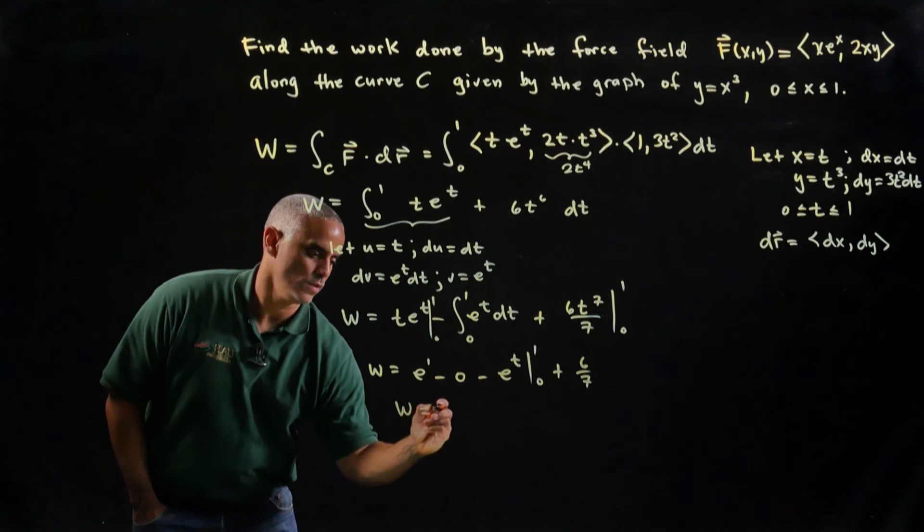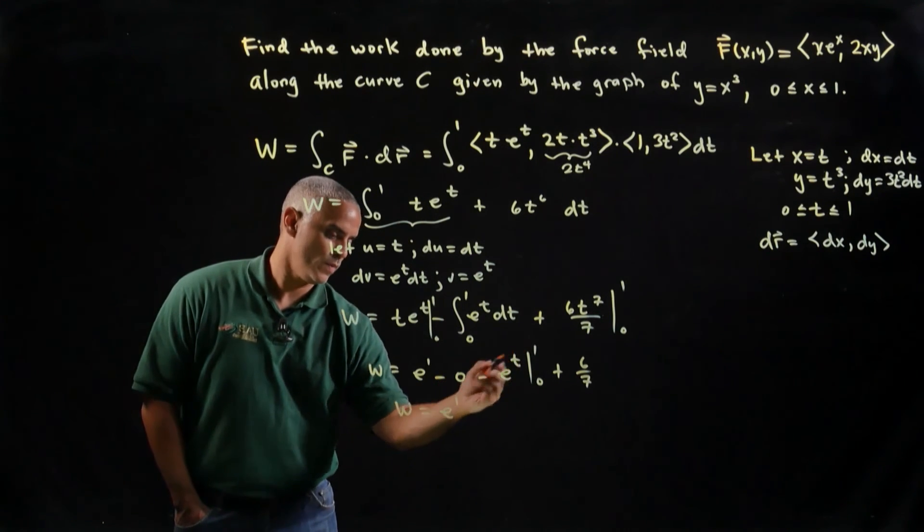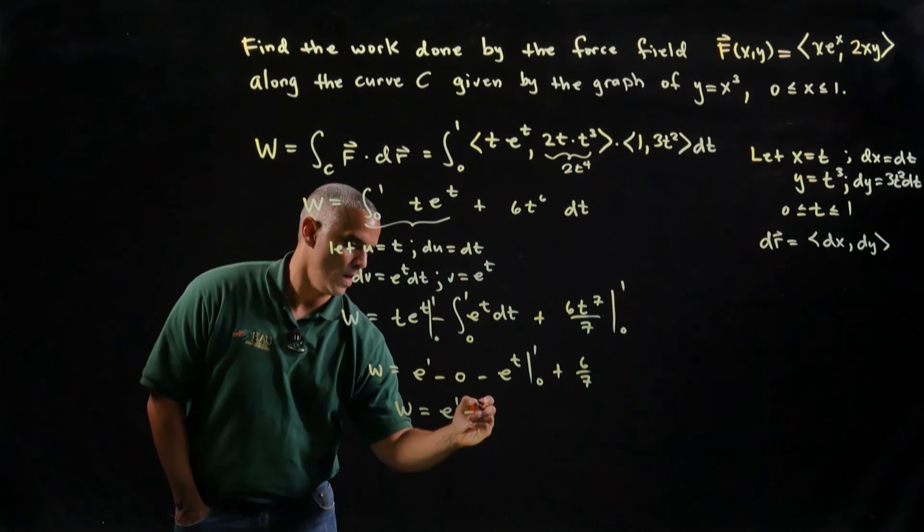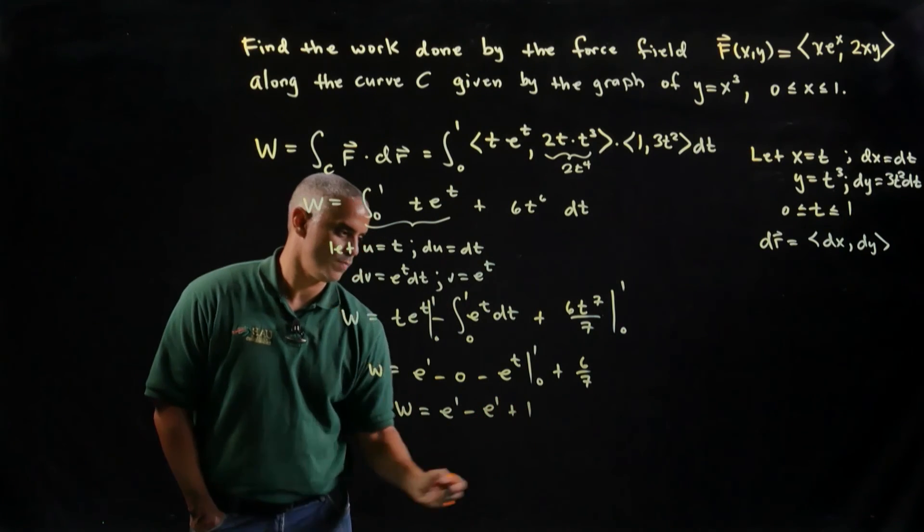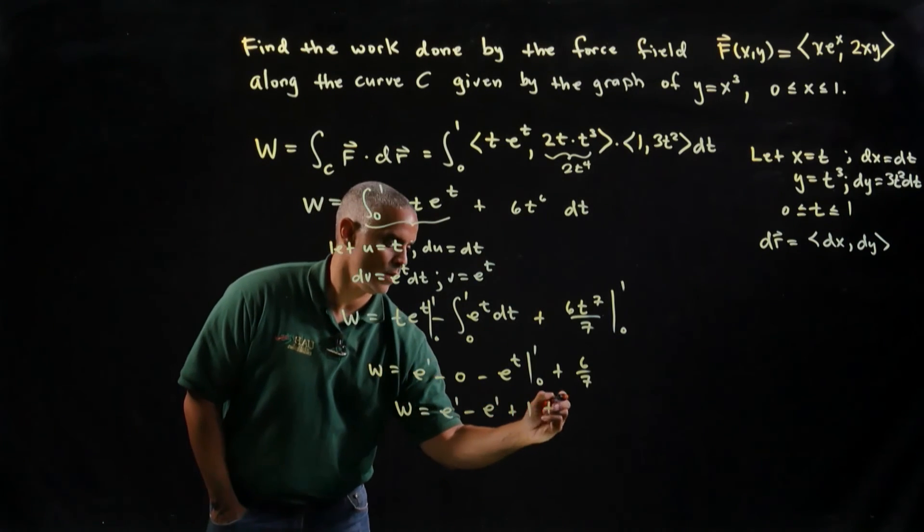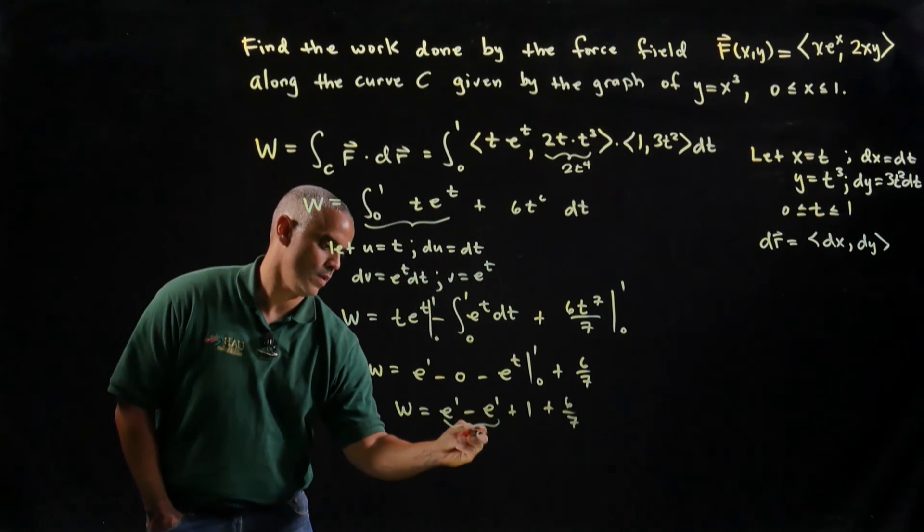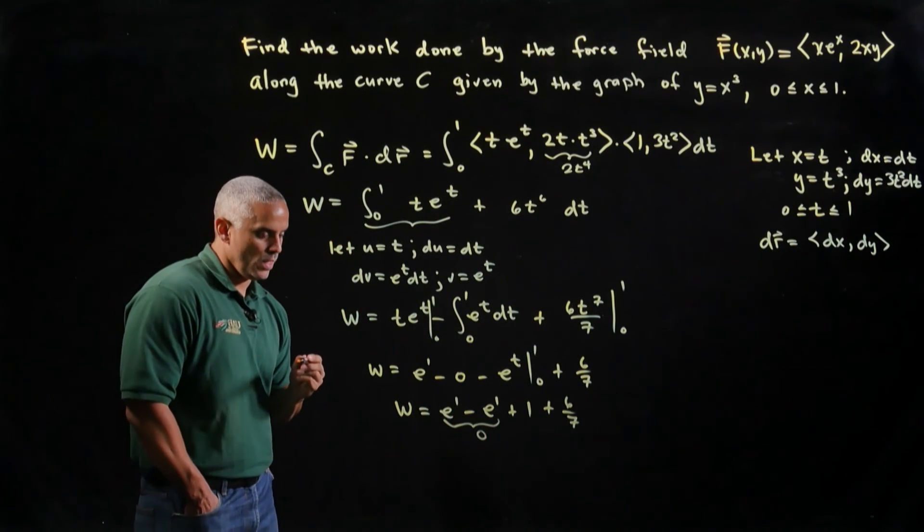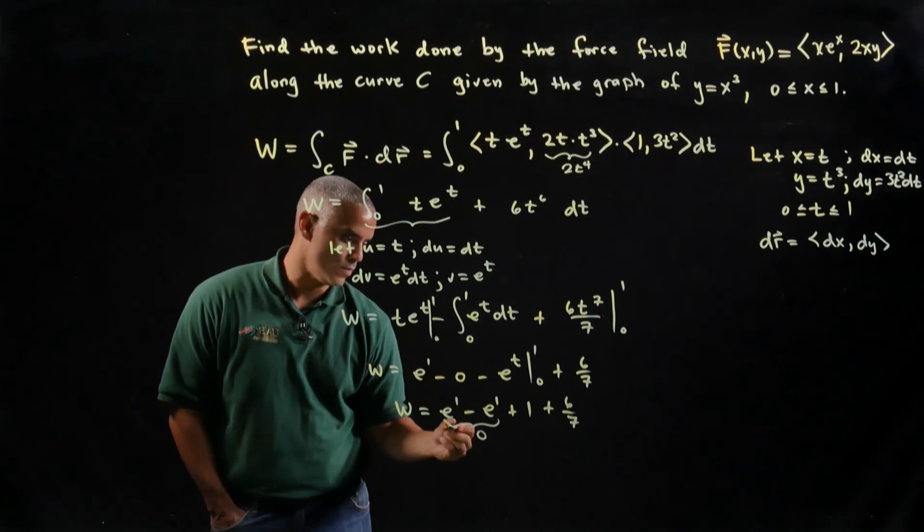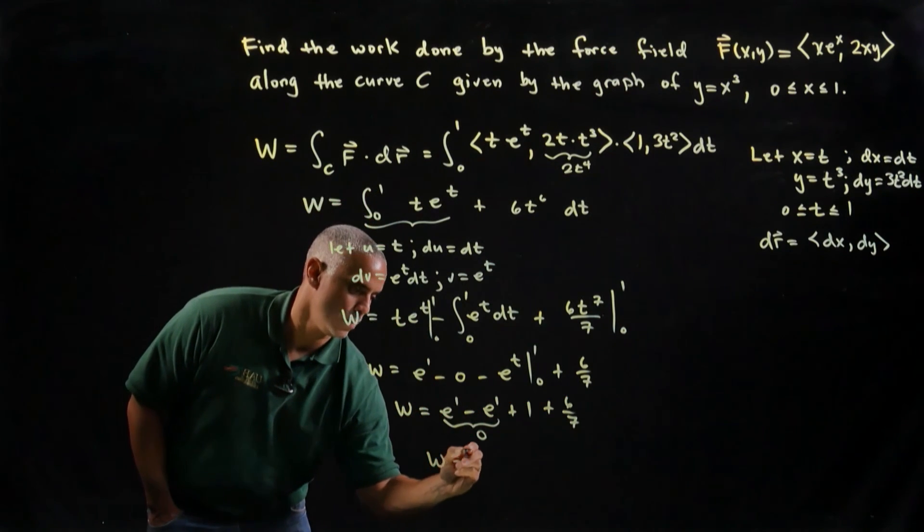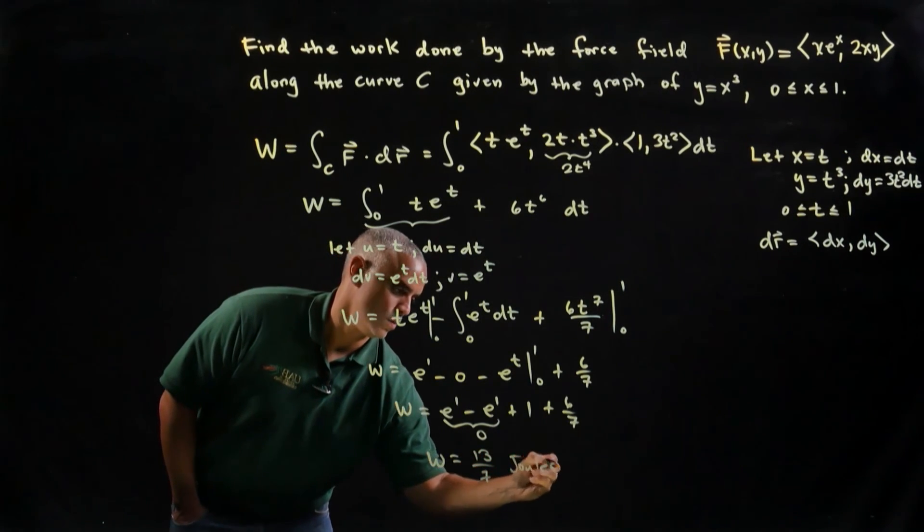Next, I'll just continue on. I get e to the first power minus 0, minus e to the first power, minus a minus e to the 0, which is plus 1, plus 6/7ths. All right, so that makes life easy. And then 1 plus 6/7ths is the same thing as 7/7ths and 6/7ths, which gives me 13 over 7 joules of work.